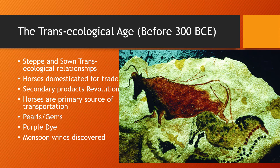Purple dye is very important, especially over in the west. Monsoon winds are also discovered over in the west. They will actually be very important, and you'll see why towards the end of our PowerPoint.